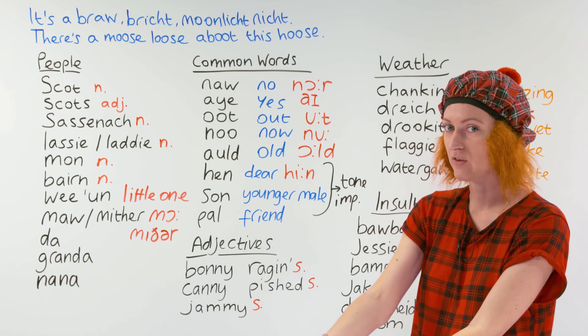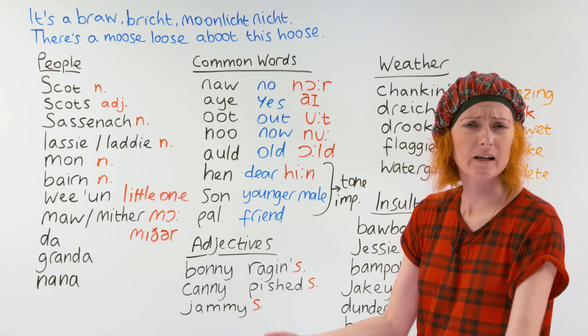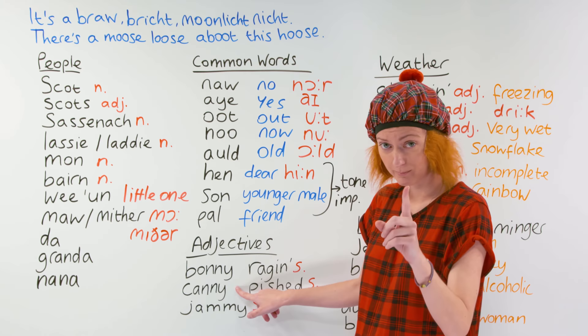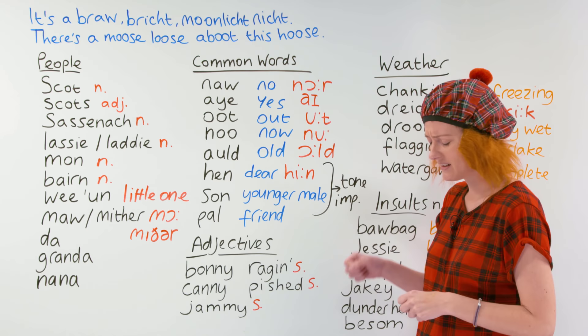Next, we have Scottish adjectives. In Scotland, they say that things are bonny. 'Oh, what a bonny wean.' Bonny means beautiful. Canny means smart — 'he's a canny mon.' Next, we've got some slang Scottish words. Raging means very angry — 'he was absolutely raging.'